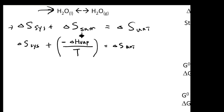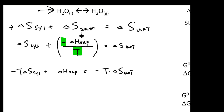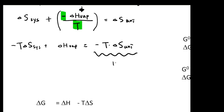What we do next is actually we multiply this on both sides. And then what we're going to have is negative T times delta S system plus delta H evaporation, which is going to equal negative T times delta S universe.